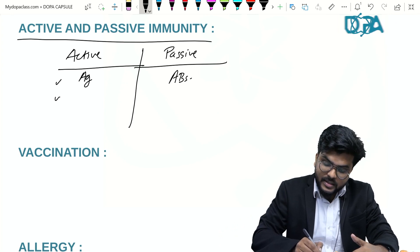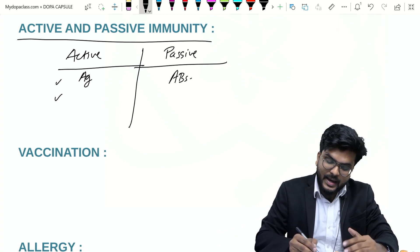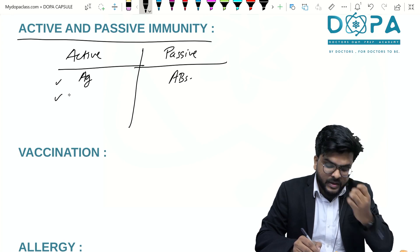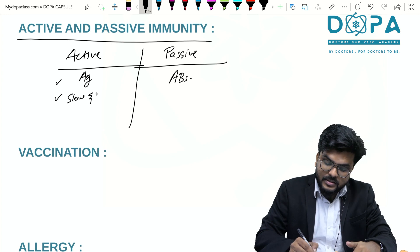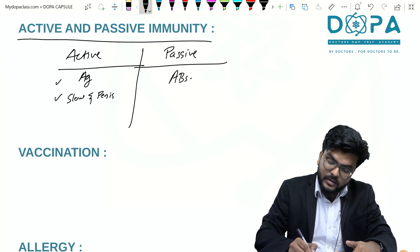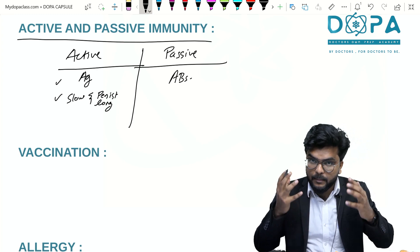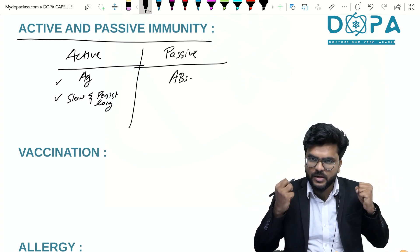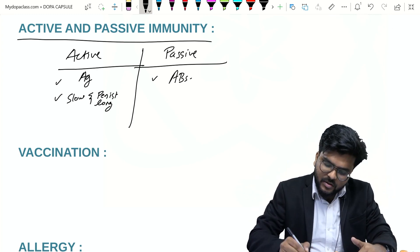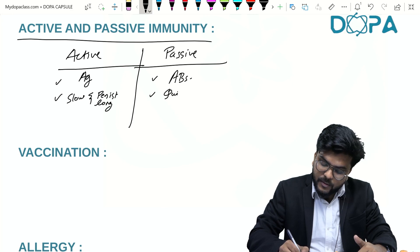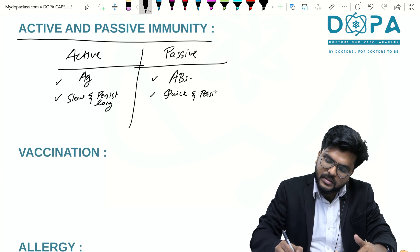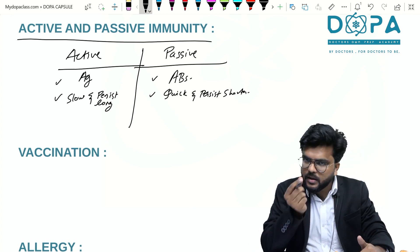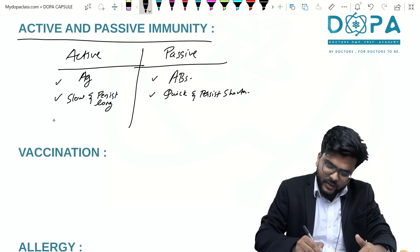Active immunity is actually slow in action, but it persists for a long period of time — maybe the entire lifetime. Passive immunity, on the other hand, is very quick in action, but the issue is it persists for only a short period of time.